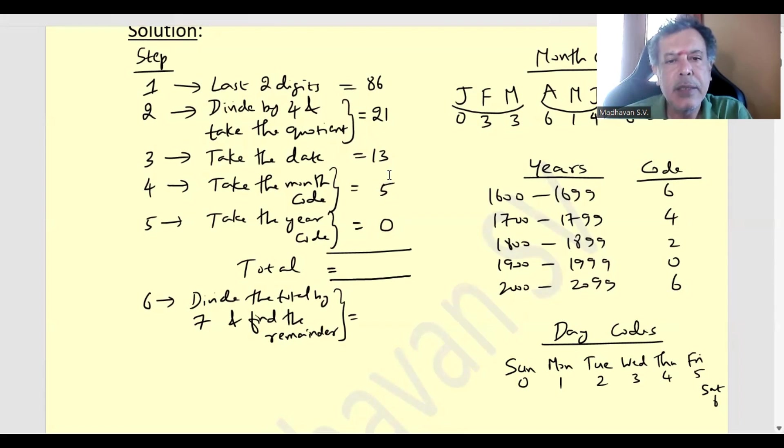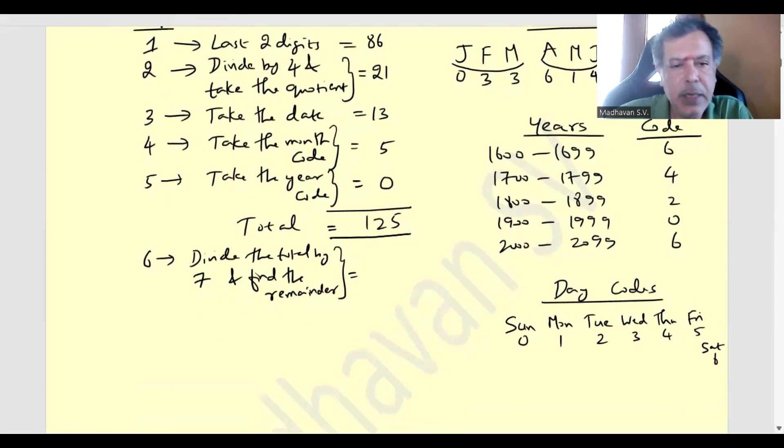Now let us add this. 5 plus 3 is 8, 9, 9 plus 6 is 15, 1, 9 plus 2, 1 plus 8 is 9, 9 plus 2 is 11, 11 plus 1 is 12, total 125. Now let us divide this by 7 and take the remainder. 7 into 125, 7 ones are 7, 7 sevens are 49, we get 6. So the remainder is 6, which means the corresponding day is Saturday.